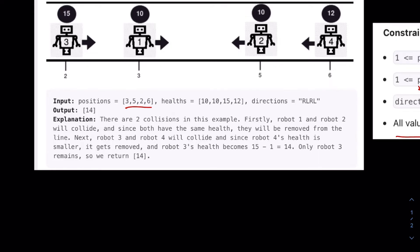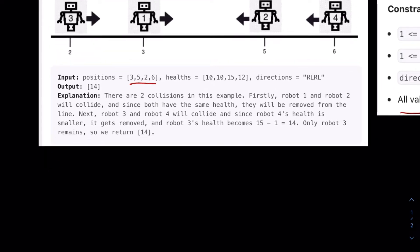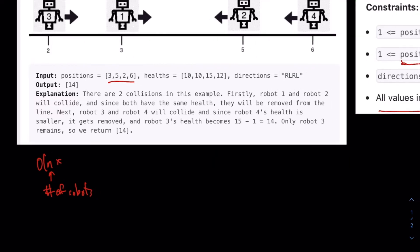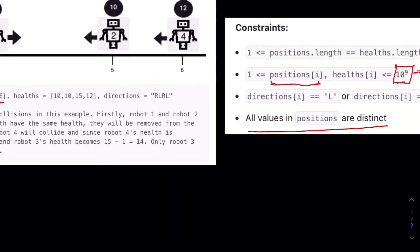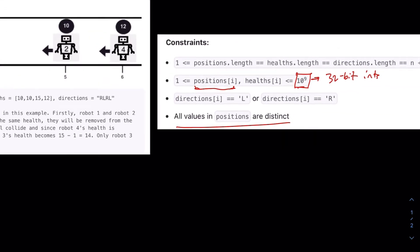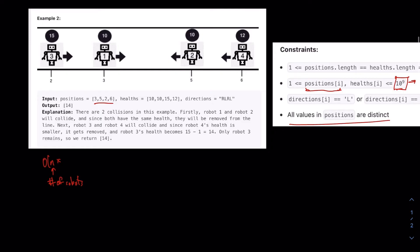If we simulate, we would have to have a number line of size 10 to the 9. And then if we had a bunch of robots, we would have to iterate through this number line a bunch of times. Or we would iterate through each robot a bunch of times. Because at each time step, we would have to go to each robot and increment or decrement it. So we would have to go to each robot, N, there are N robots.